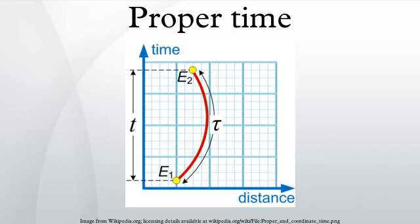Mathematical formalism. The formal definition of proper time involves describing the path through spacetime that represents a clock, observer, or test particle, and the metric structure of that spacetime. Proper time is the pseudo-Riemannian arc-length of world lines in four-dimensional spacetime.